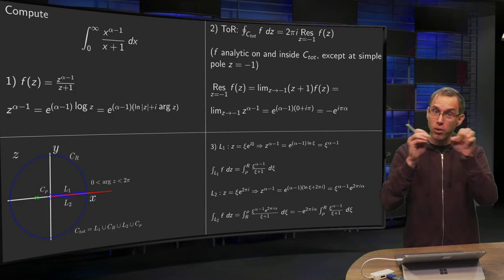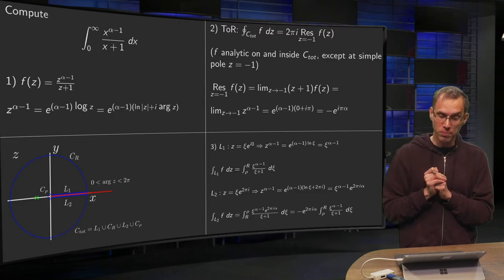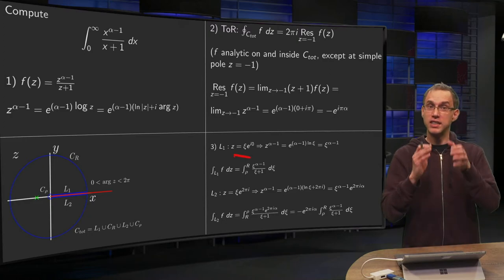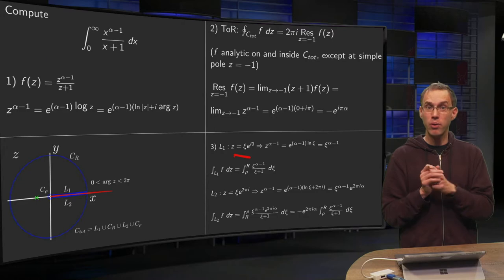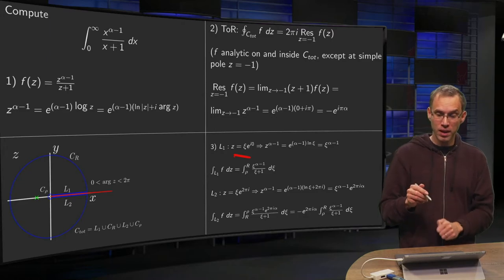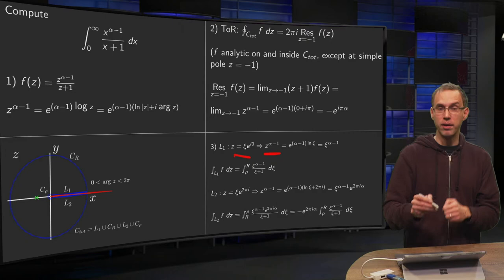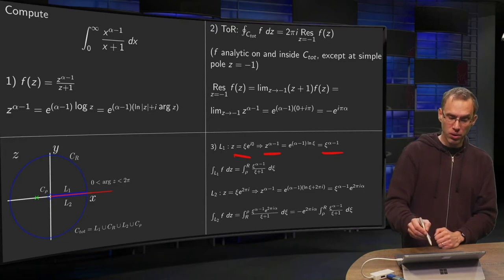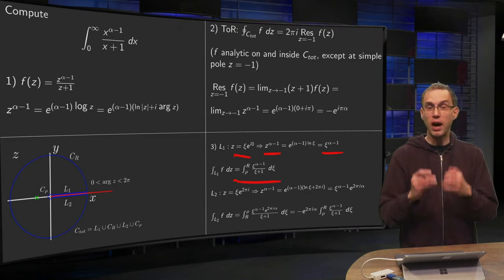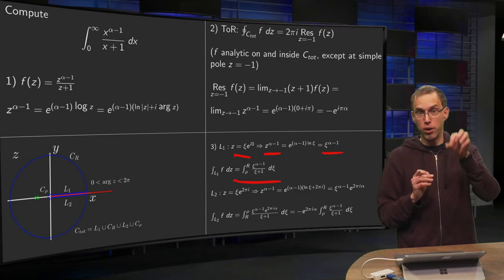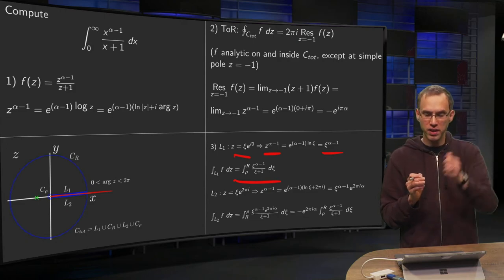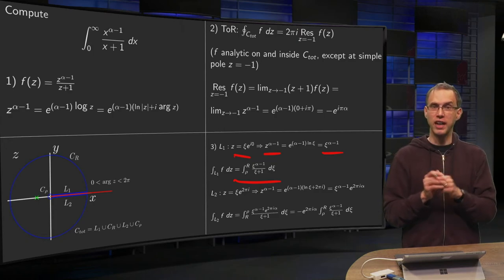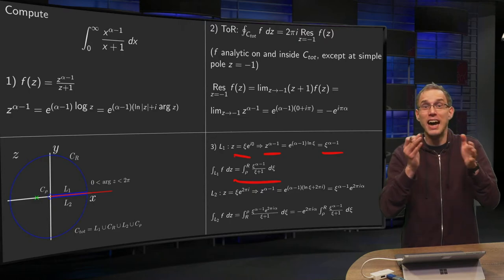Then the integral along L1 and integral along L2. So along L1 we are all happy, we can just parameterize z equals x, our argument there is 0, so z to the power alpha minus 1 is also easy, that's just x to the power alpha minus 1. So our integral along L1 of f is just the one we want to have in the end. And from rho to R, in the limits, that will become 0 to infinity. x to the power alpha minus 1 divided by x plus 1, dx.